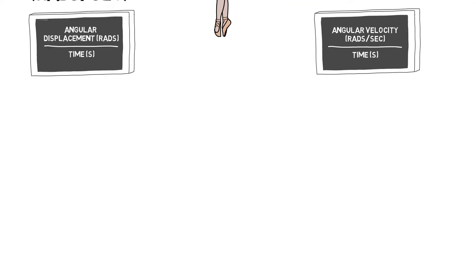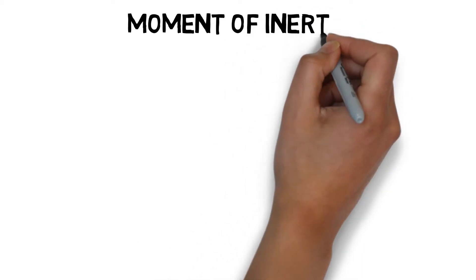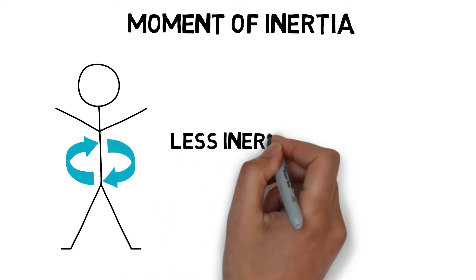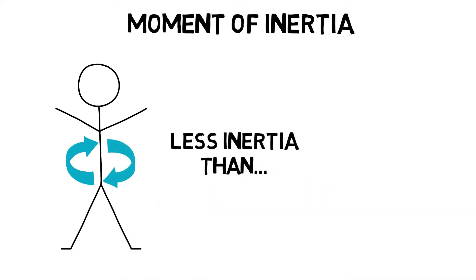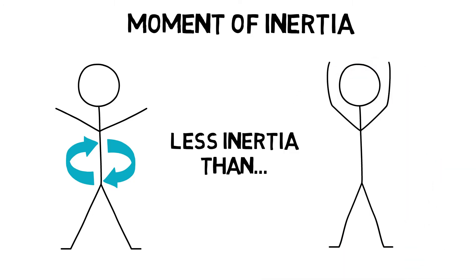Moment of inertia is the resistance of a body to angular motion or rotation. Inertia depends on the mass of the body, the greater the mass, the greater tendency to resist change in its state of motion, and the distribution of mass around the axis. For example, a tucked somersault has a lower moment of inertia than a straight somersault.